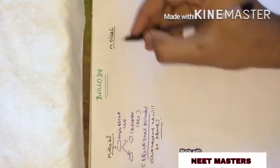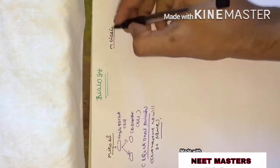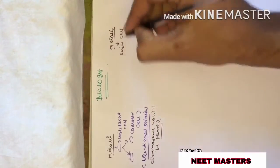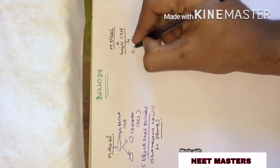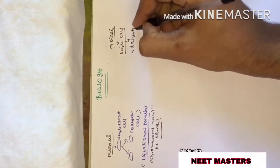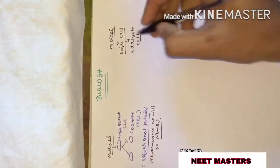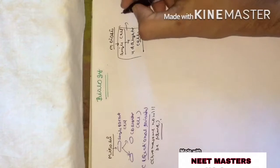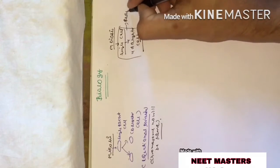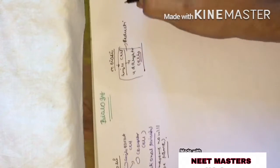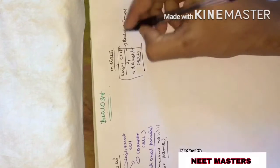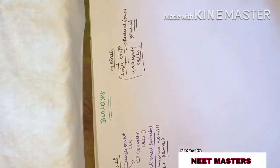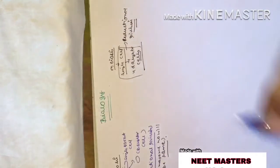On the contrary, meiosis is a reduction division in which a single cell divides. Here, the chromosome number will be reduced to half. This is the key distinction of meiosis as a reduction division.